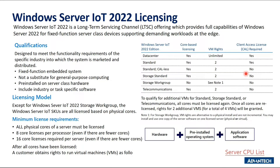Windows Server IoT 2022 is the latest version. It is a long-term servicing channel (LTSC) offering that provides full capabilities of Windows Server 2022 for fixed function, server-class devices supporting demanding workloads at the edge. Windows Server IoT has a full version with multiple SKUs. The main differences between these versions are VM support and CAL requirements. For standard licensing, all cores must be licensed to qualify for additional VMs, granting rights for two additional VMs for a total of four VMs.